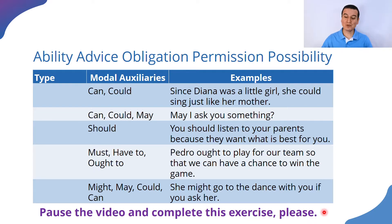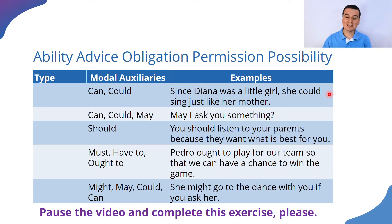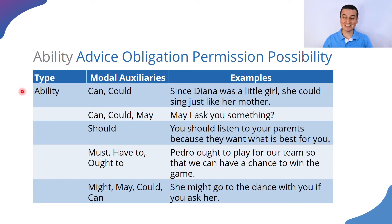Great, I hope that you really paused the video and completed this activity. Let me show you the answers. In the first example: 'Since Diana was a little girl, she could sing just like her mother.' Diana had the capability of singing just like her mother — she was able to sing. So the modal auxiliaries 'can' and 'could' express ability. If that's the answer you have, congratulations!